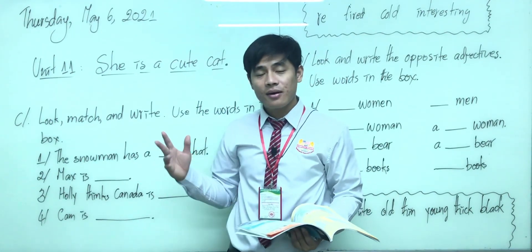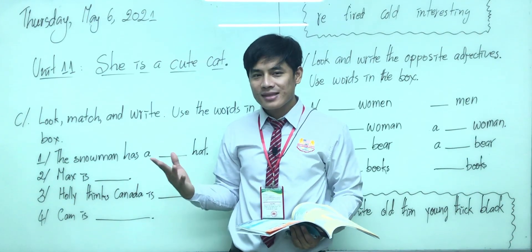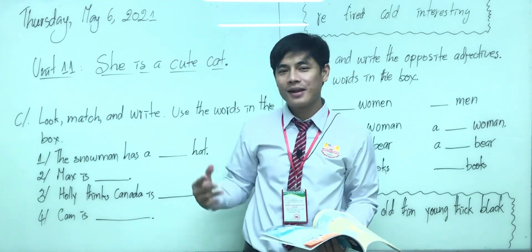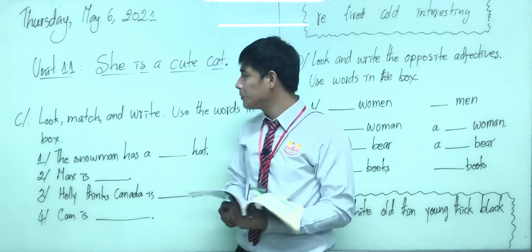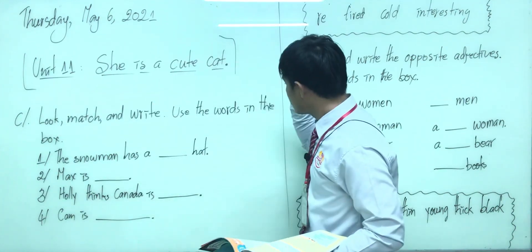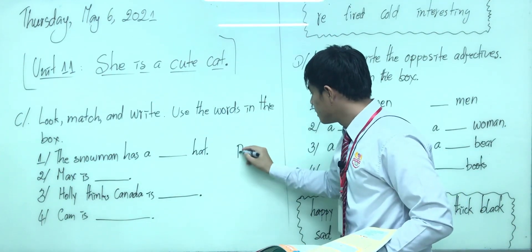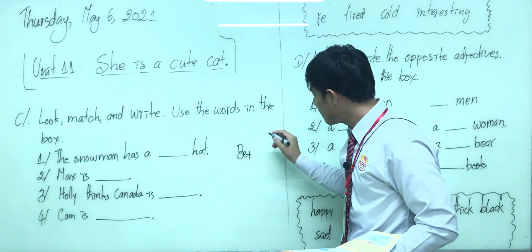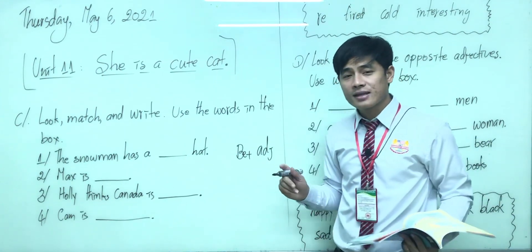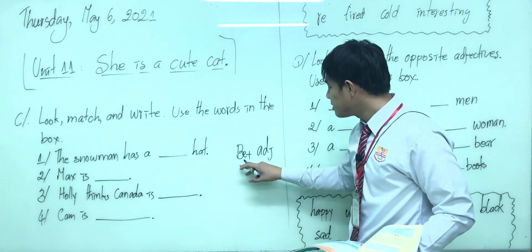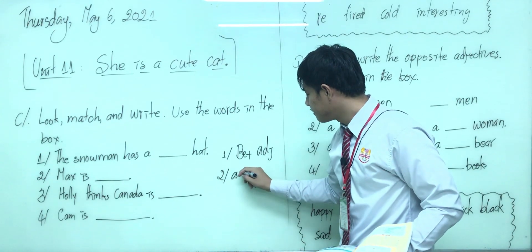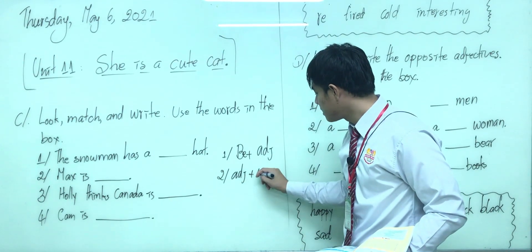Before we start doing this exercise, teacher would like to review a little bit about what we have learned so far. Yesterday we learned about — from Kramer Planet 3 — 'be plus adjective.' So there are two forms of adjectives you can use in a sentence: first, 'be plus adjective,' and second, 'adjective plus noun.'